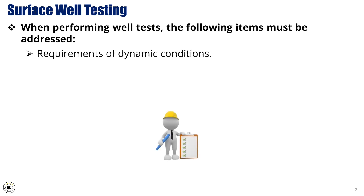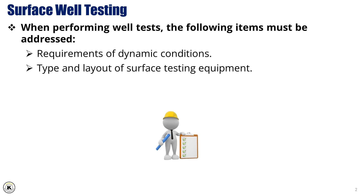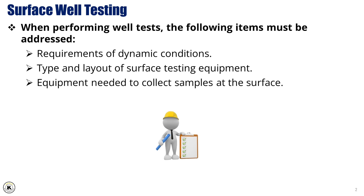When performing well tests, several key factors must be addressed to ensure accurate results and safety. These include understanding the dynamic conditions of the well, which is essential to properly plan and execute the test, ensuring the well behaves as expected under different pressures and flow rates. Choosing the right surface testing equipment and arranging it correctly is crucial for efficient data collection and maintaining system integrity. Proper tools for collecting samples of produced fluids are important, as these samples provide vital information about the well's productivity and reservoir characteristics. Safety protocols must be strictly followed, including proper handling of hazardous materials, controlling well pressure, and having emergency response procedures in place.